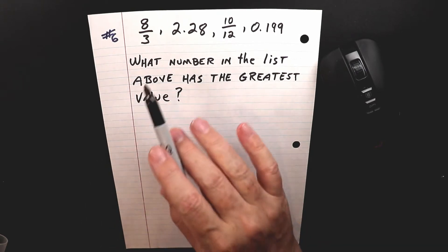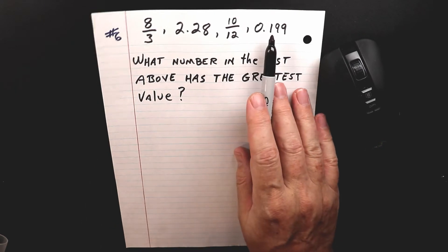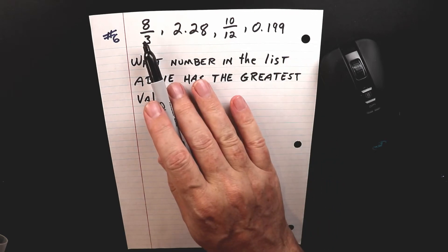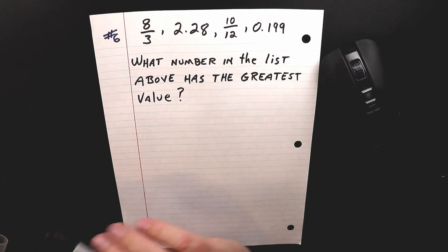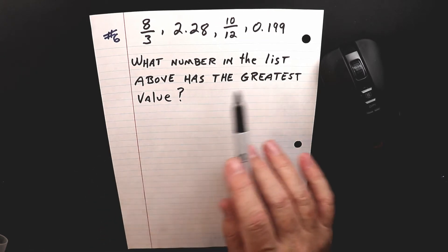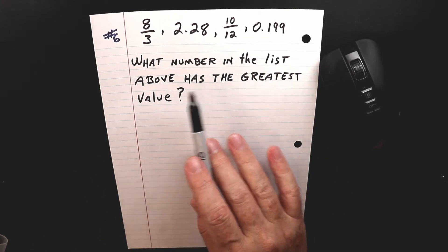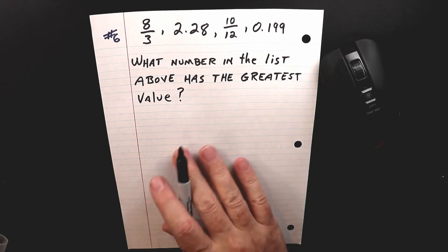This is number six. This is where we're looking at a list of numbers. We have fractions and decimals, a fraction and another decimal, and we have to figure out which one is greatest in the list. So what number in the list above has the greatest value?